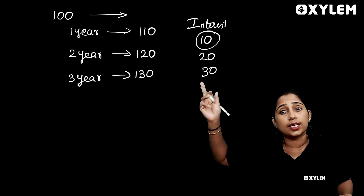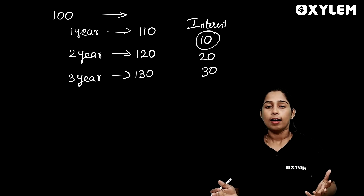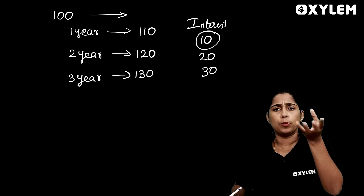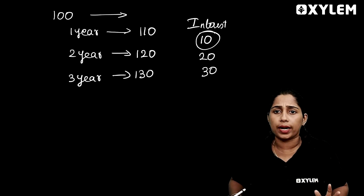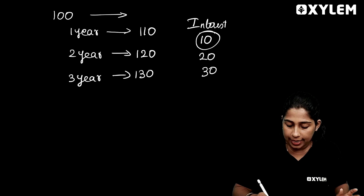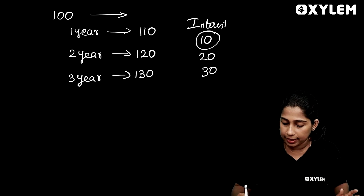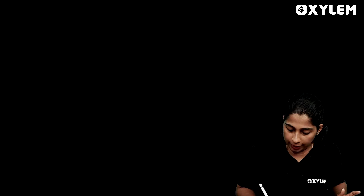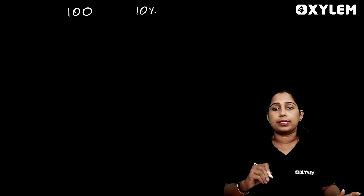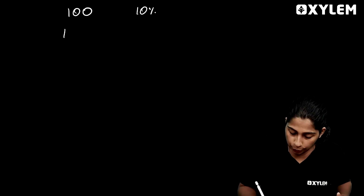2 years is $20 and 3 years is $30. What's the interest rate? It is 10% interest rate. If you get 100 rupees, that is a 10% interest rate.